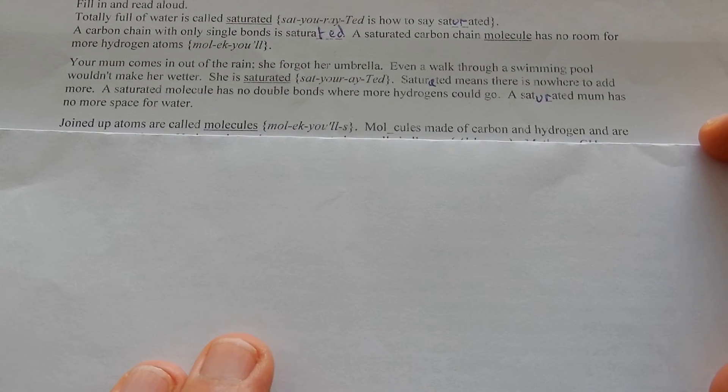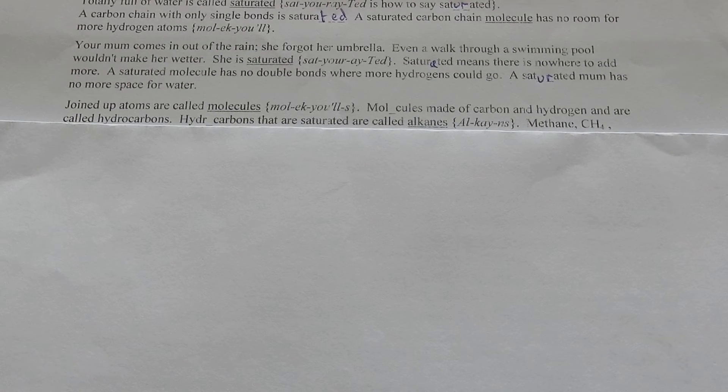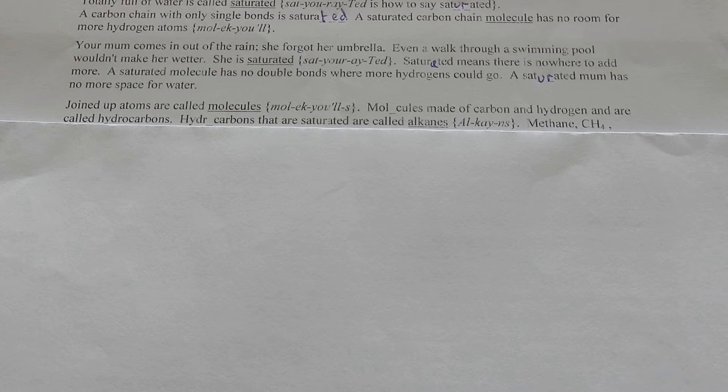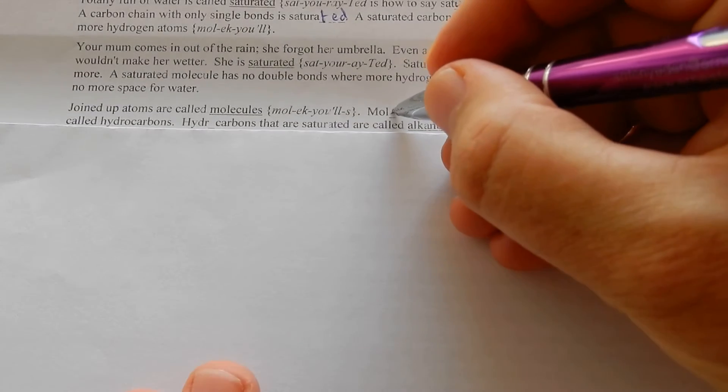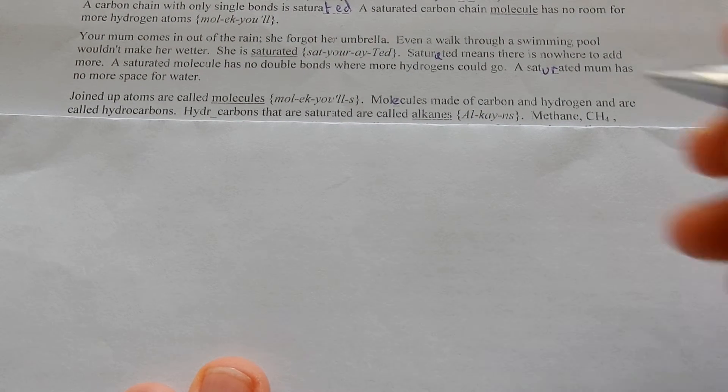Joined-up atoms are called molecules. Molecules made of carbon and hydrogen are called hydrocarbons. The hydro bit says there's hydrogen in there. Hydrocarbons that are saturated are called alkanes.